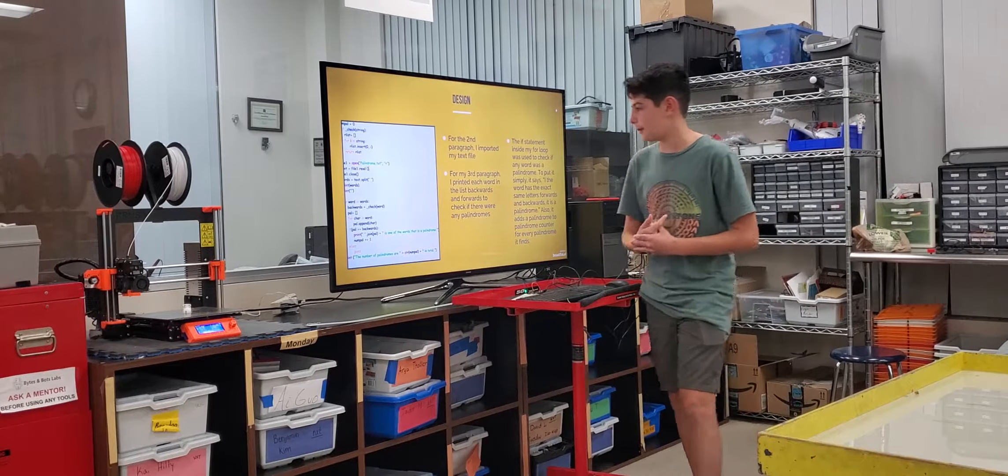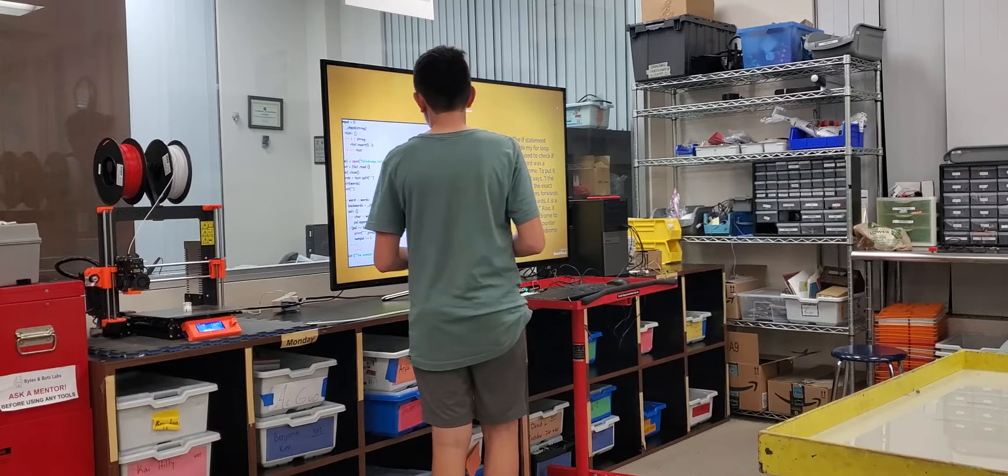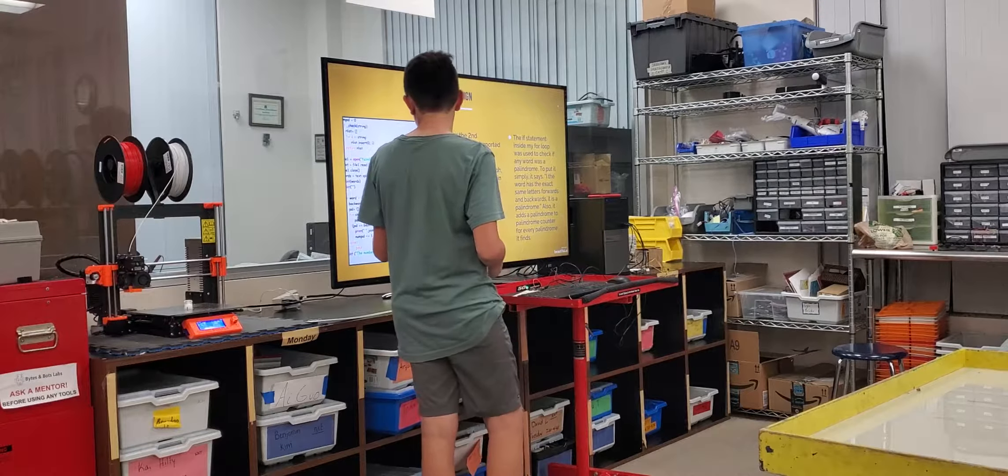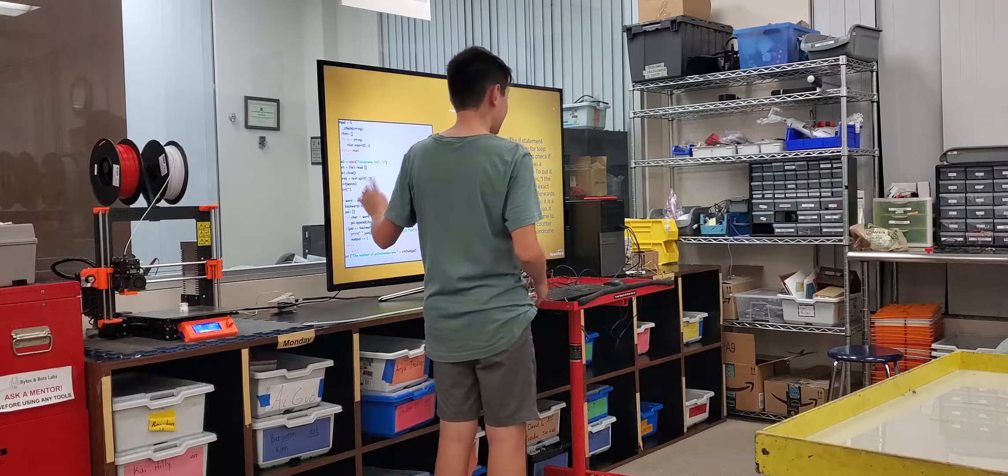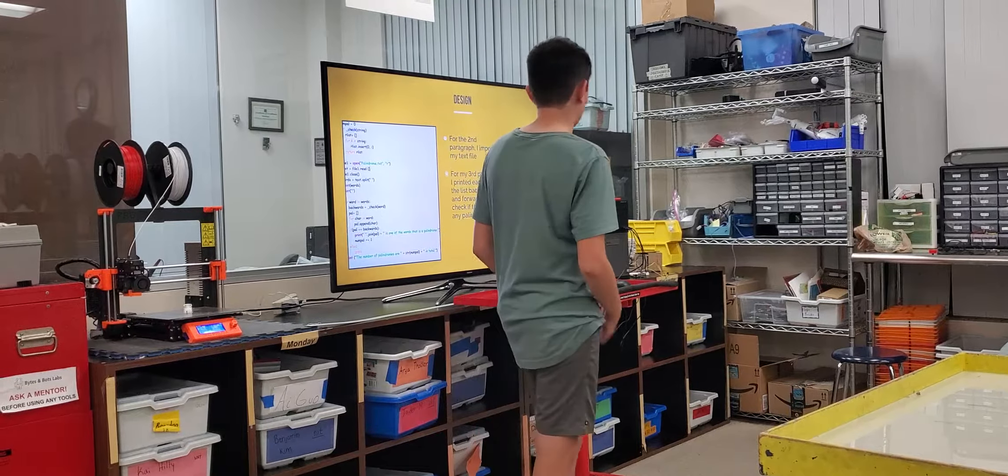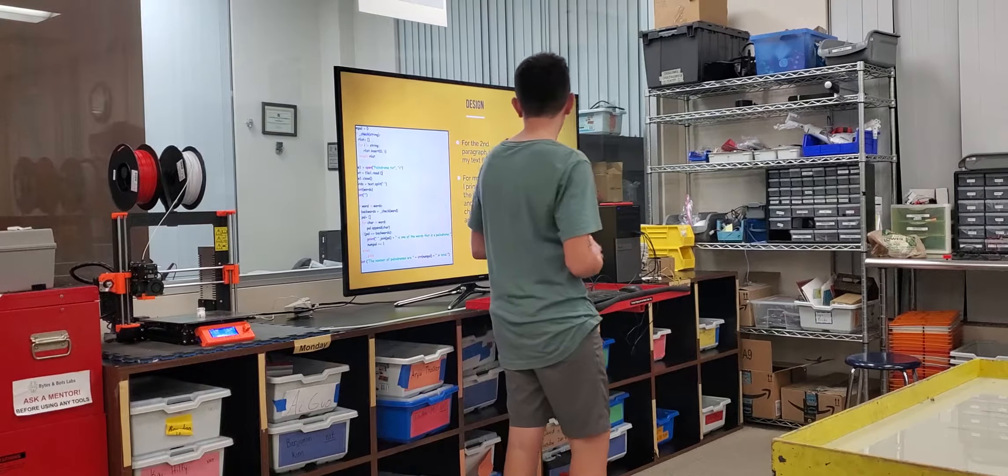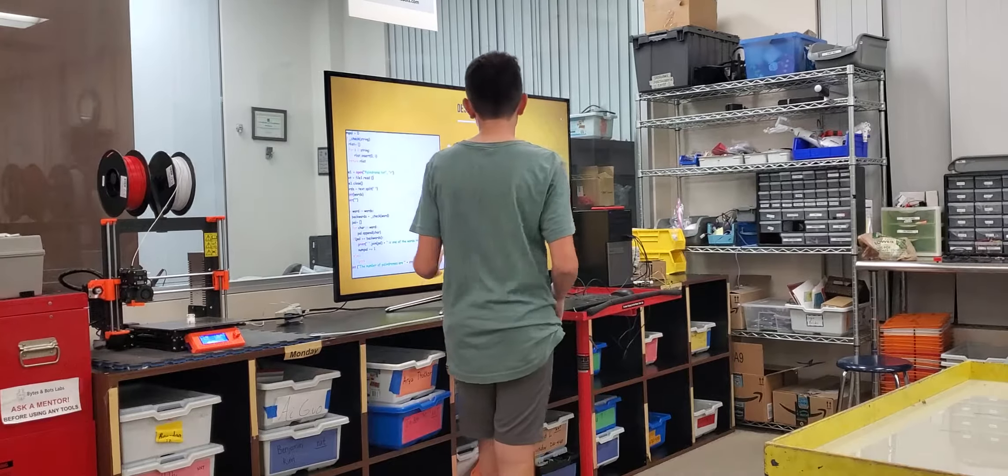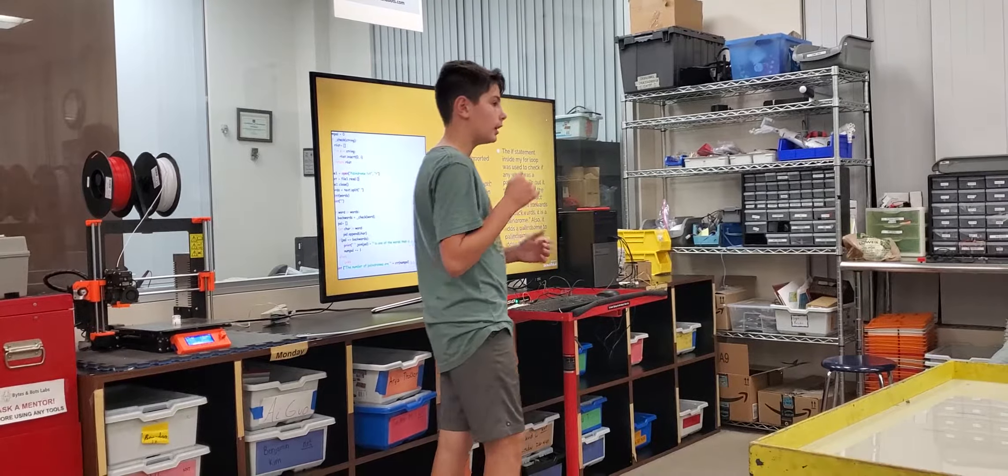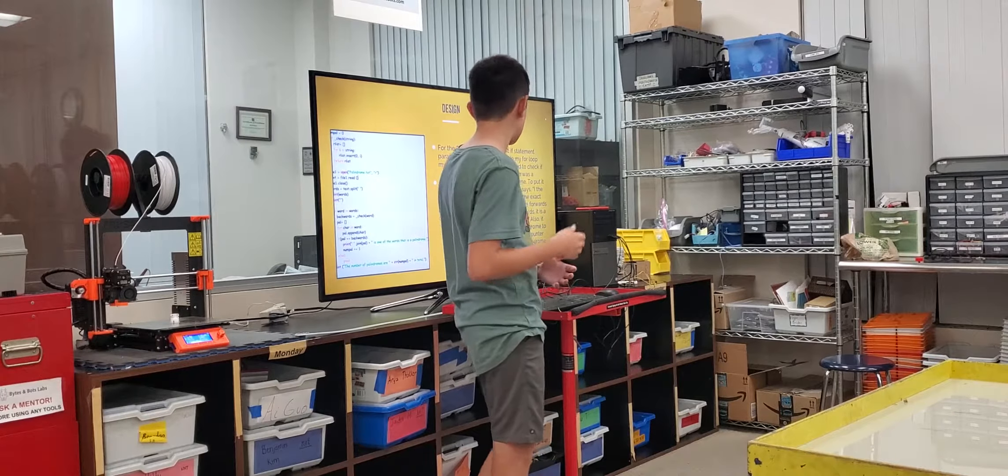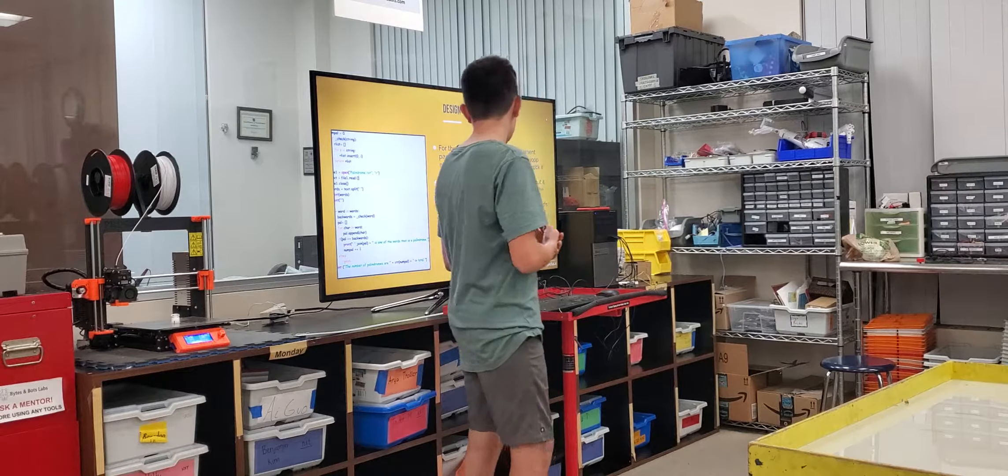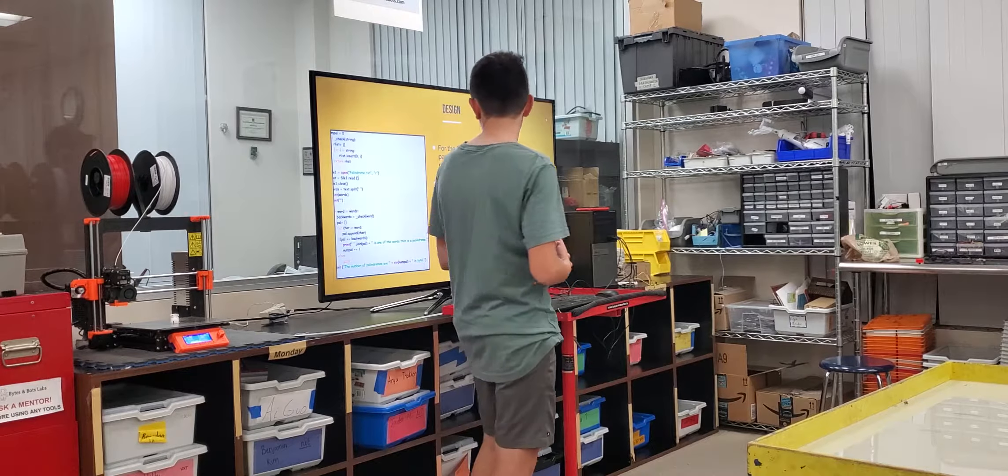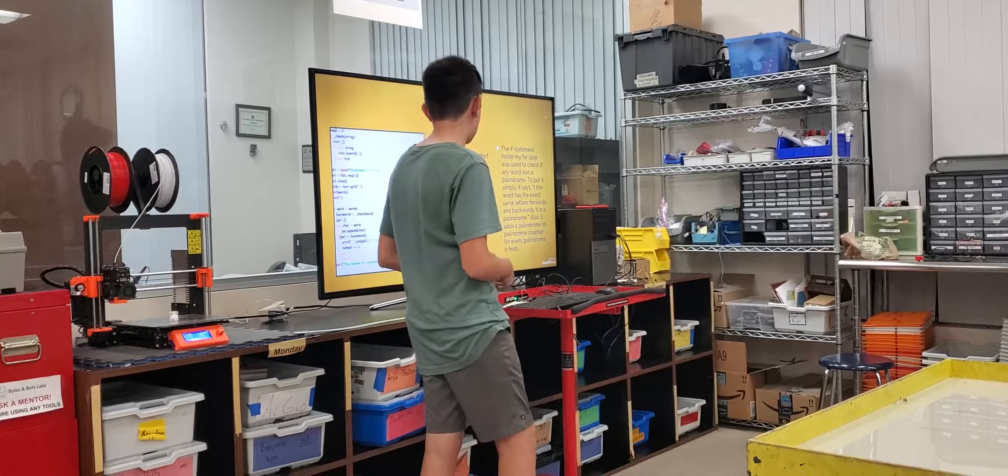Alright, I'll explain my code. Basically, in this second paragraph, I imported my text file. This is the name of the text file. I named it words, so I could print it using the name word. And then, for the third paragraph, I printed each word in the list, backwards and forwards. I printed each word separately, to check if any of them were palindromes. That's what that third paragraph did.